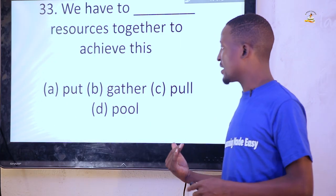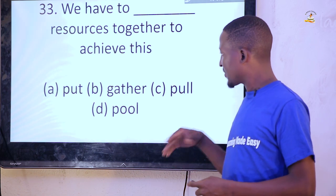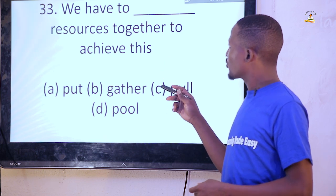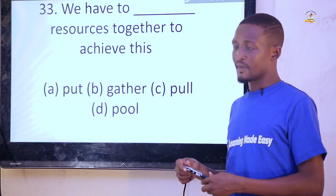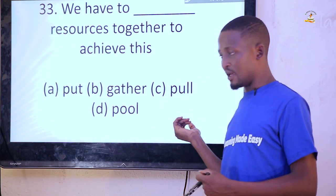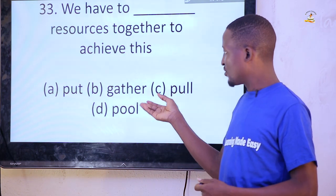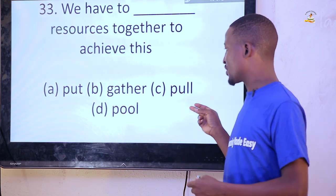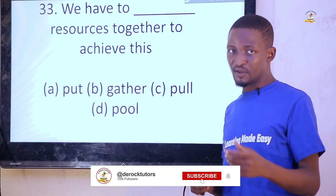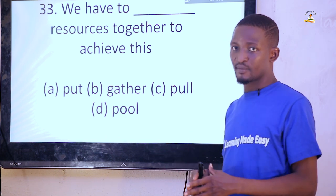'We have to dash resources together to achieve this.' What verb should be used for resources? Options: put, gather, pull (P-U-L-L), pool (P-O-O-L). The correct answer is 'pool' — option D, P-O-O-L. You pool resources together to achieve this, meaning you put all hands on deck to get it done.